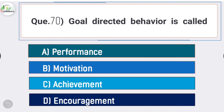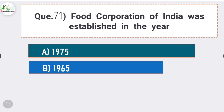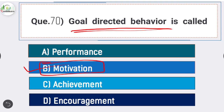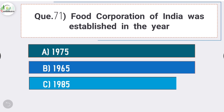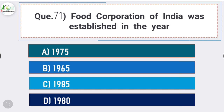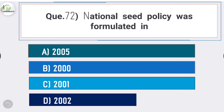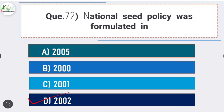Question number seventy: goal directed behavior is called - answer is option B - motivation. Goal directed behavior is called motivation. Question number seventy-one: Food Corporation of India was established in the year - answer is option B - 1965. Question number seventy-two: National Seed Policy was formulated in the year - answer is option D - 2002.